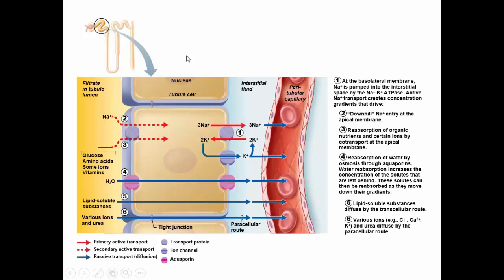We adjust sodium and potassium in the collecting duct cell so that we have a gradient to pull sodium in. As sodium is actively transported in, some molecules are secondarily transported in with it. Water can pretty much go straight through. Lipid-soluble substances go pretty much straight through. A lot of ions and urea use the paracellular route to get back into the blood.